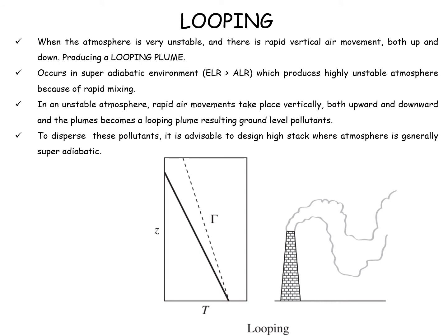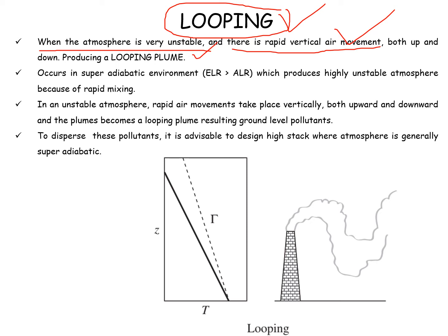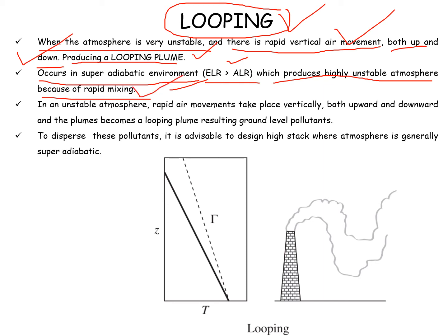Moving on to the next type of plume behavior, that is the looping type. When the atmosphere is very unstable, there is a rapid vertical air movement both up and down, producing a looping plume. Here a superadiabatic environment occurs, meaning ELR is greater than ALR — the reverse condition of the conic type — which produces a highly unstable atmosphere because of rapid mixing.